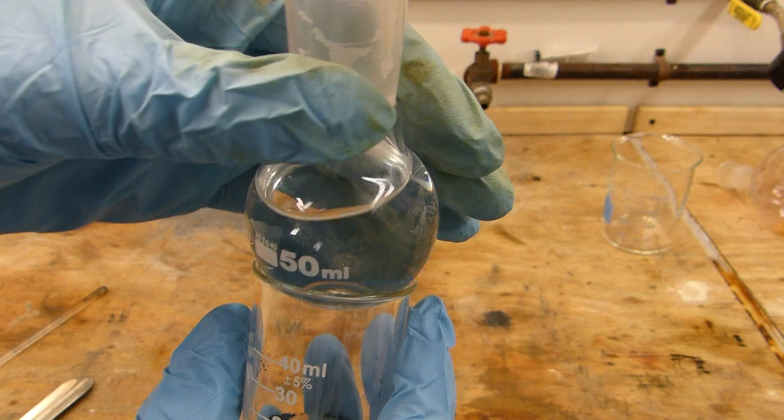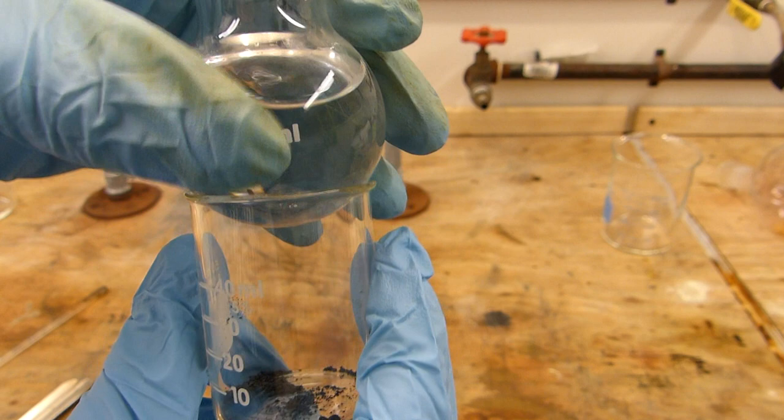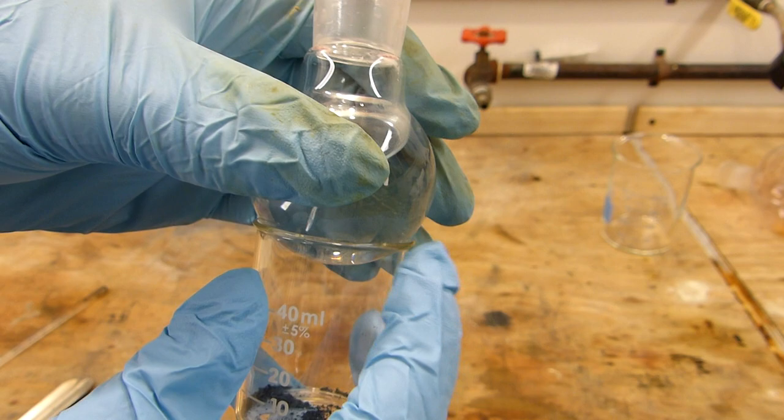And so by heating this beaker I'll be able to evaporate this iodine to form that purple vapor. Now if I place something cold on the top of the beaker like this 50 ml round bottom flask which is full of pretty cold tap water, I'll be able to sublime the iodine off the bottom of the flask.